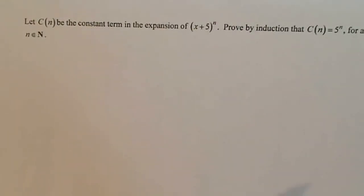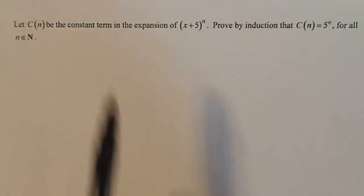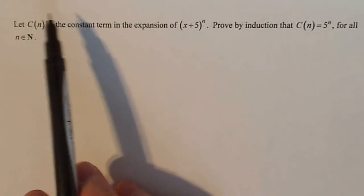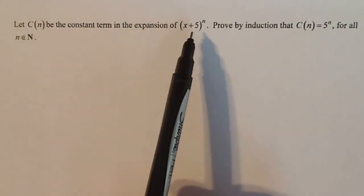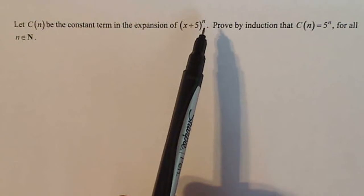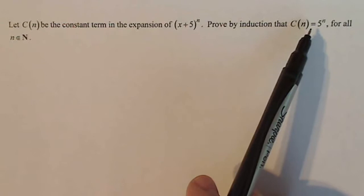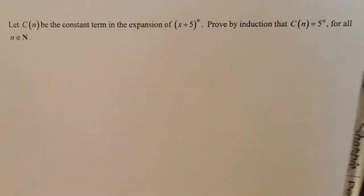There's still a lot of words in it, but nevertheless, it's maybe a little more organized. So this is the problem and I think it's an interesting problem. Let C(n) be the constant term in the expansion of (x+5)^n. Prove by induction that the constant term for this guy is 5^n no matter what n is.